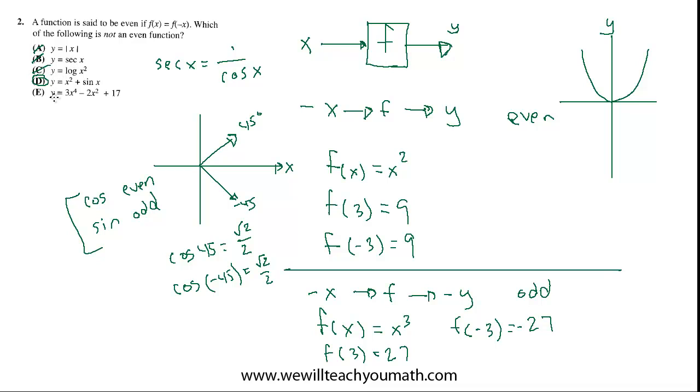And the same logic applies to E. We have even powers. We have 3x to the 4th minus 2x squared. So those two terms are both even terms. And the 17 is always going to be 17. And you can test this too. If you put in 1 and negative 1 into this function twice, you'll see that you get the exact same thing both ways. So that's an even function.